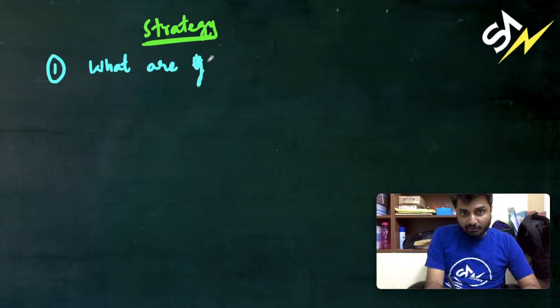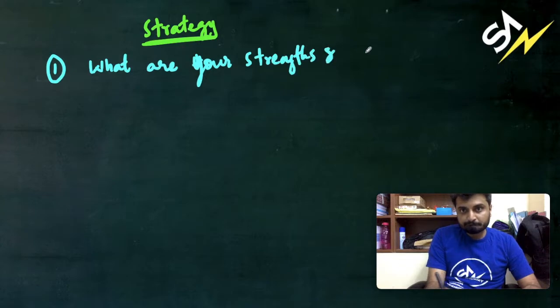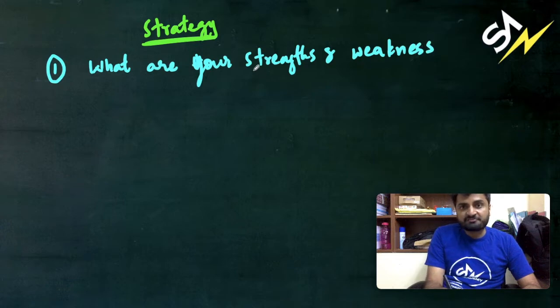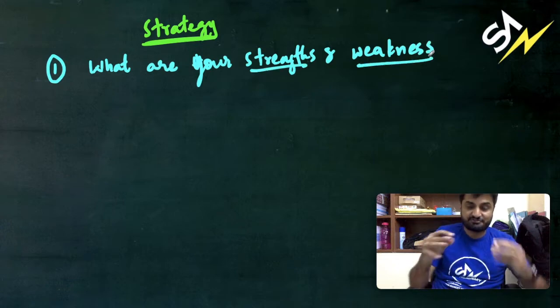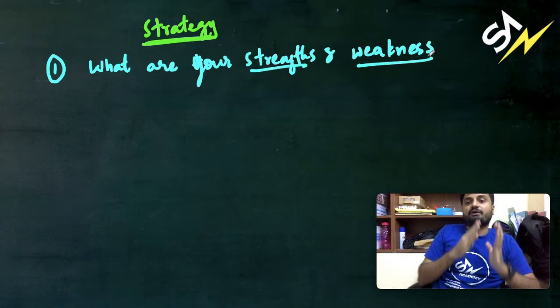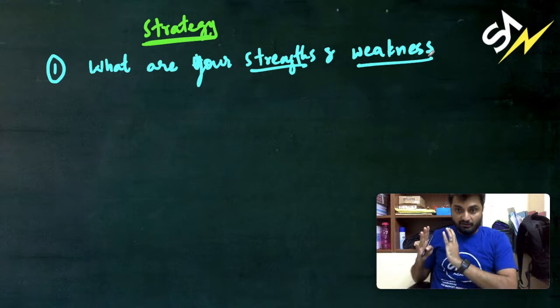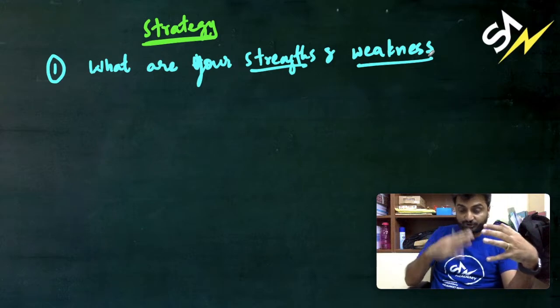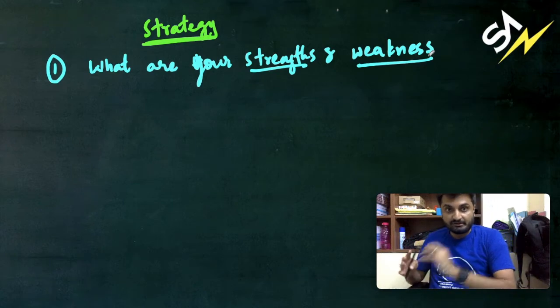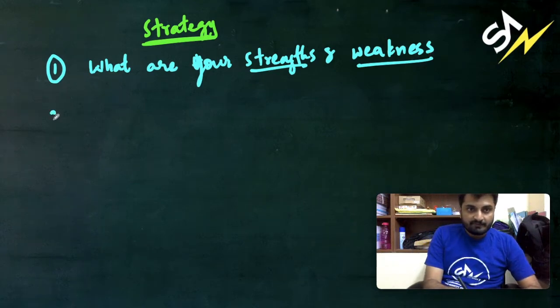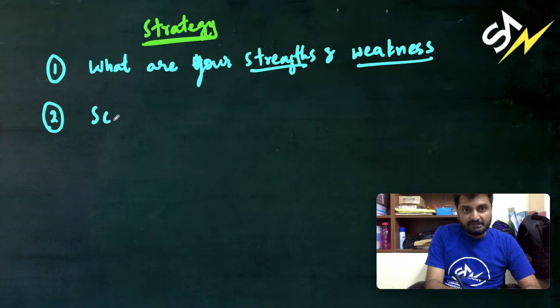One: what are your strengths and weaknesses? In the sense, what are your strong subjects, what are your weak subjects? In the strong subjects, what are your strong topics, what are your weak topics? You need to know this. Second thing, as I've already mentioned, you need to look at your score.